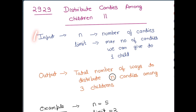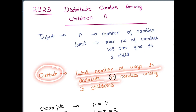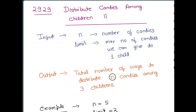In this problem the given input is an integer n which is the number of candies we have and there is a limit variable which is also given, which is the maximum number of candies you can give to a particular child. The output we need to give is the total number of ways we can distribute the n candies among three children.